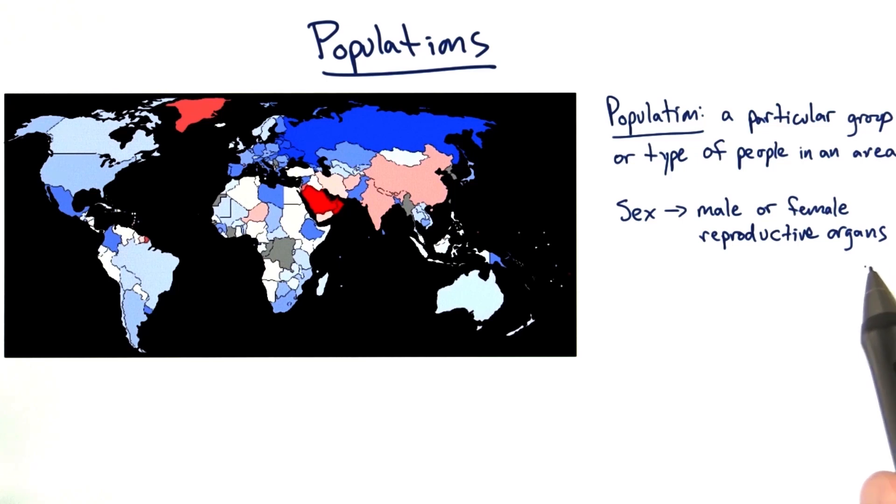Now, it is true that it's possible to have both male and female reproductive parts, and those are called intersex individuals. But for our purposes, we're only going to consider two categories in the meantime.